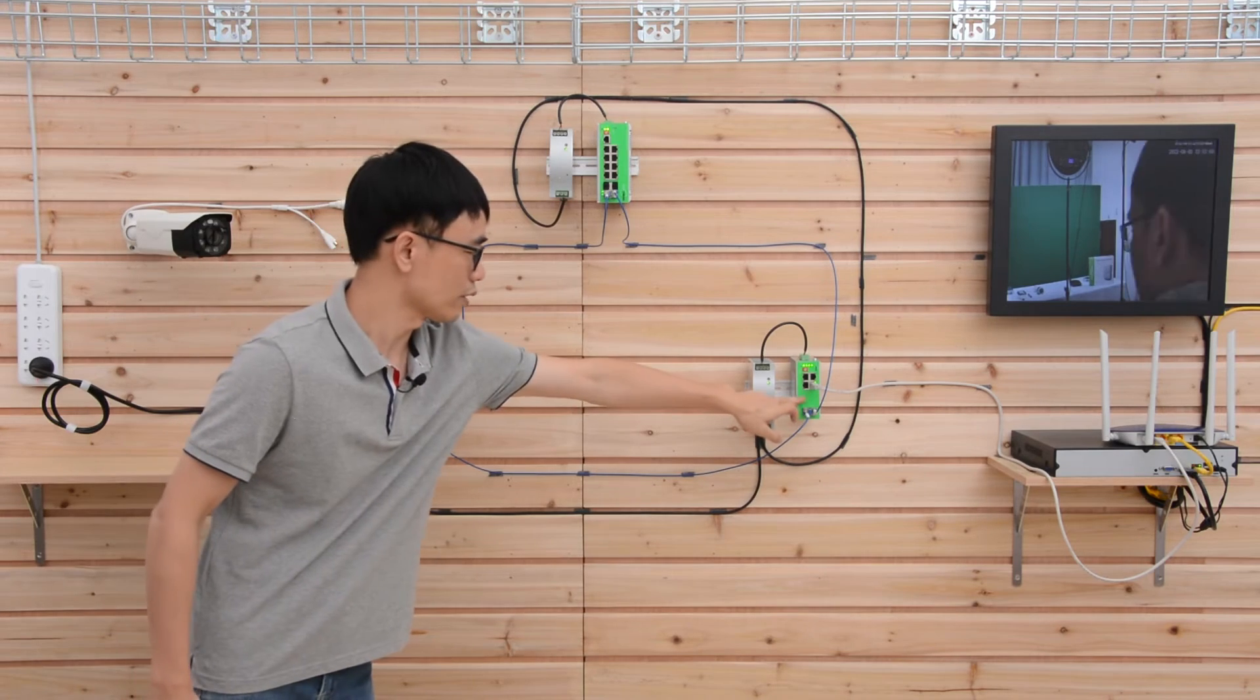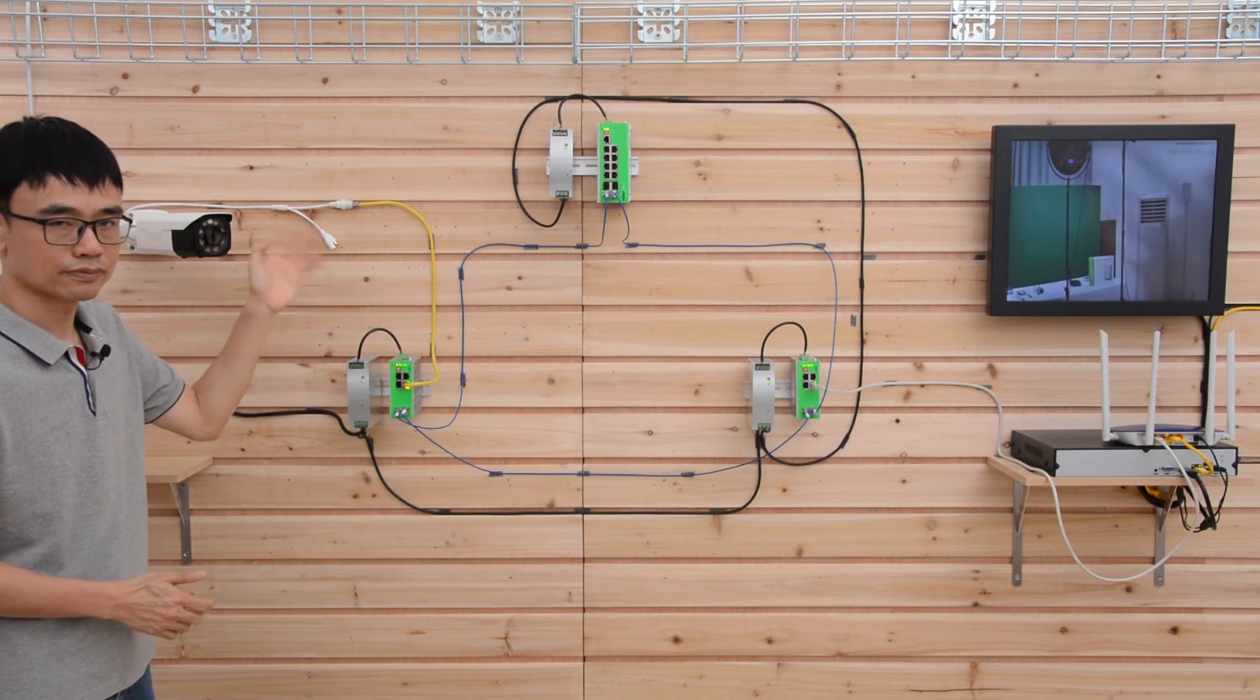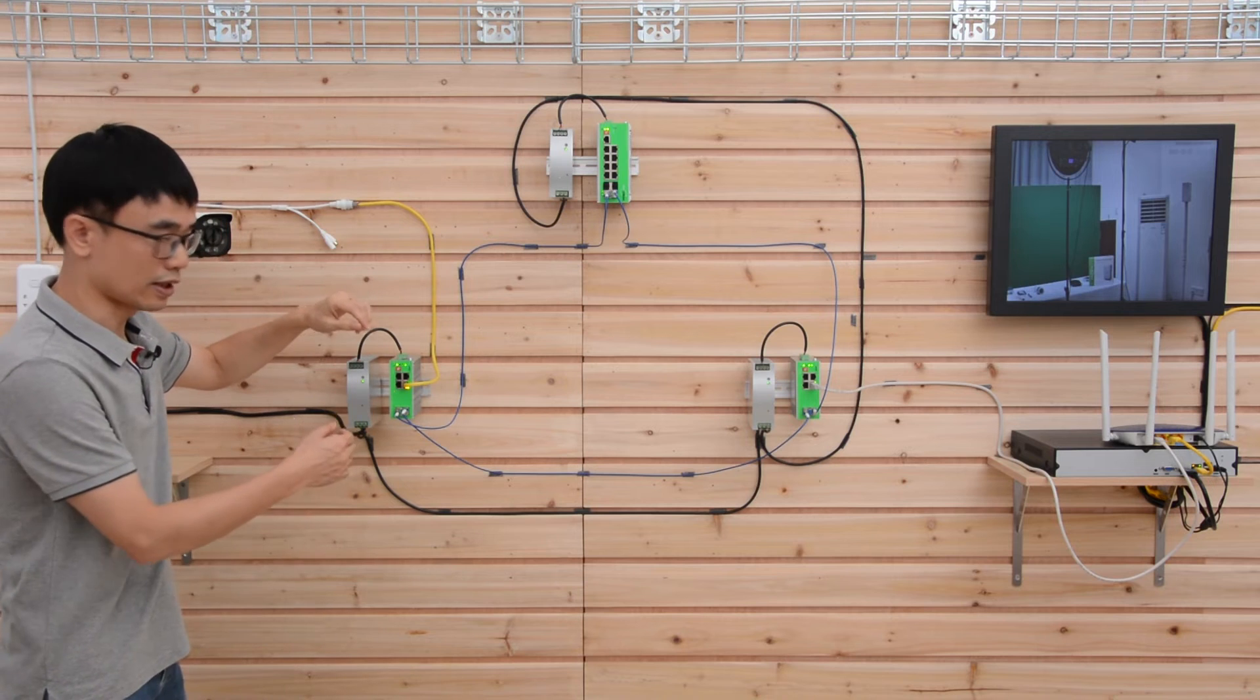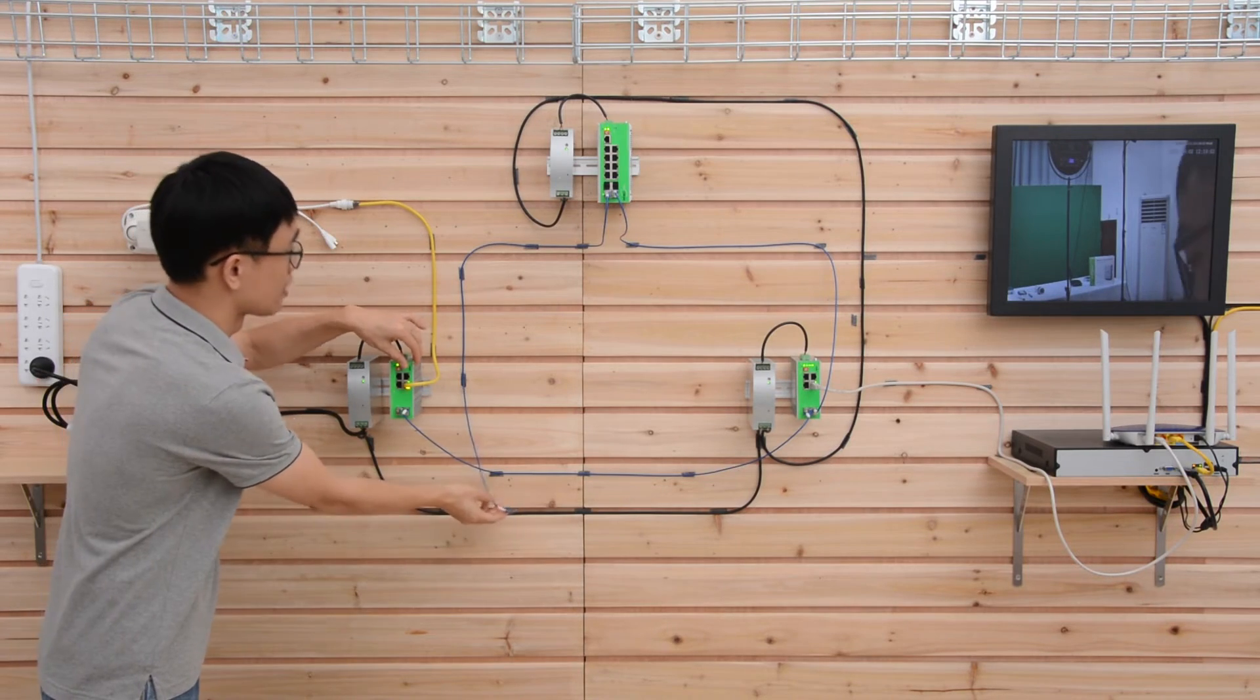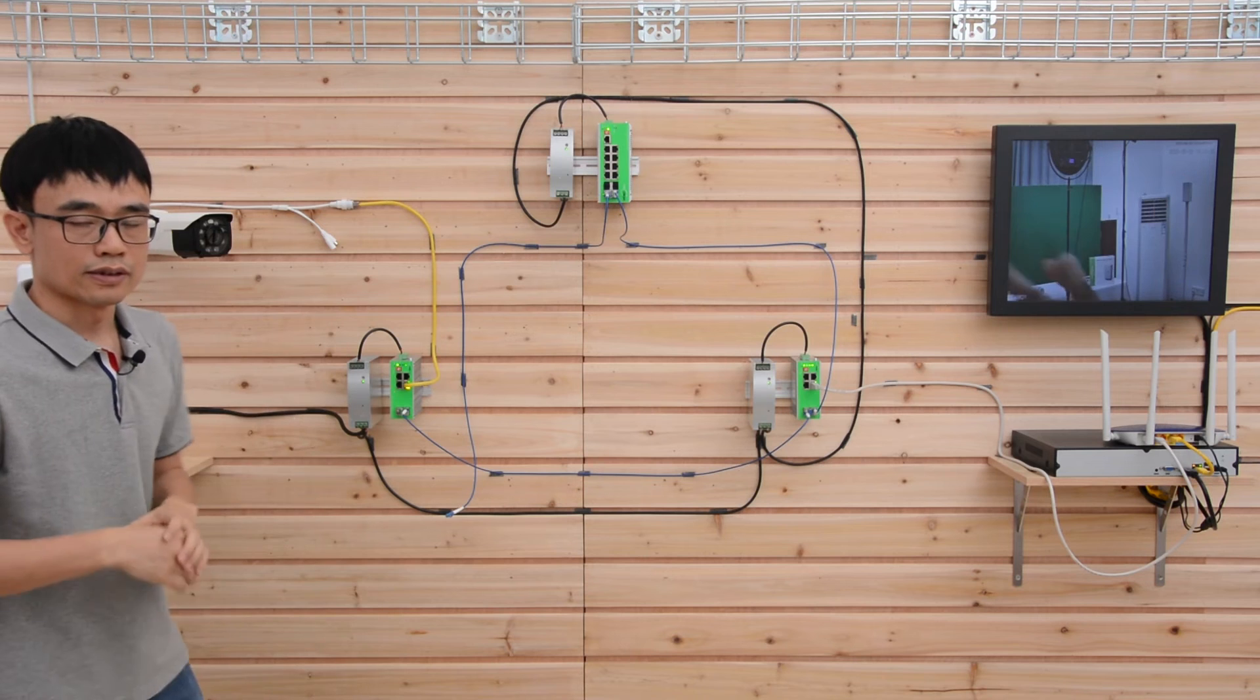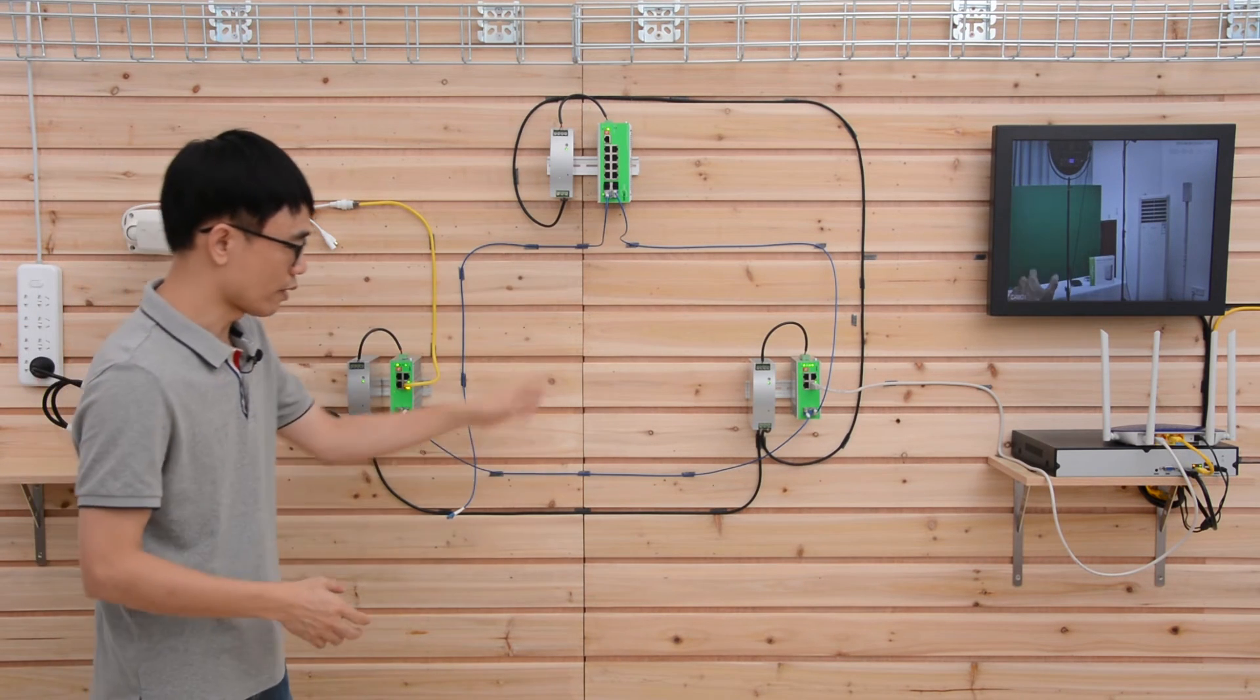And the right switch is connecting to the recorder and the core switch. So the camera is live. Let's say if this link goes down, let me just remove the cable and see what happens. Now the last switch is not connected to the first switch. But we still can see the camera is live. The ERPS will find another path to return to the center if one of the links is down.